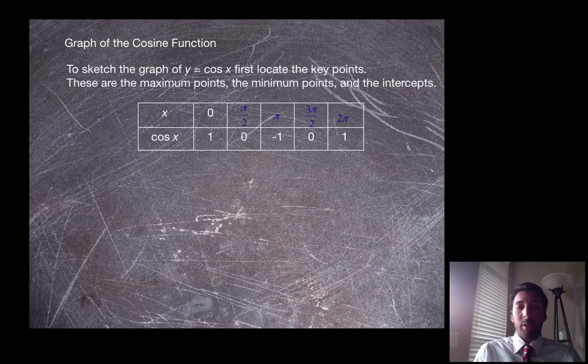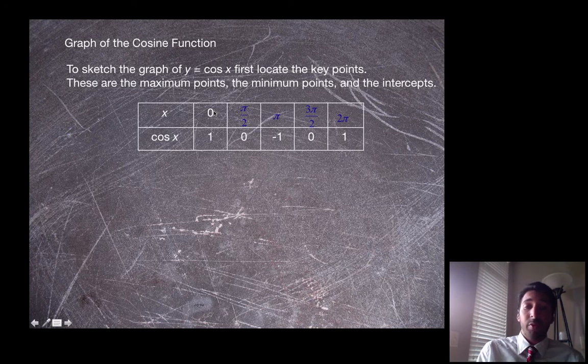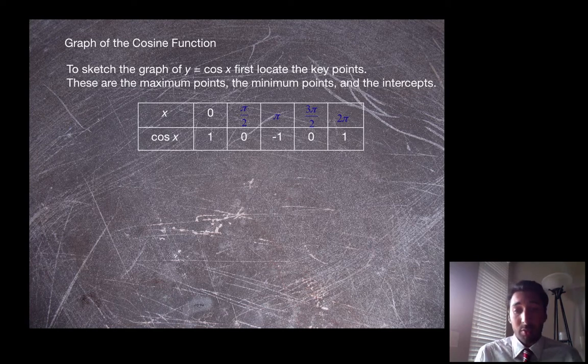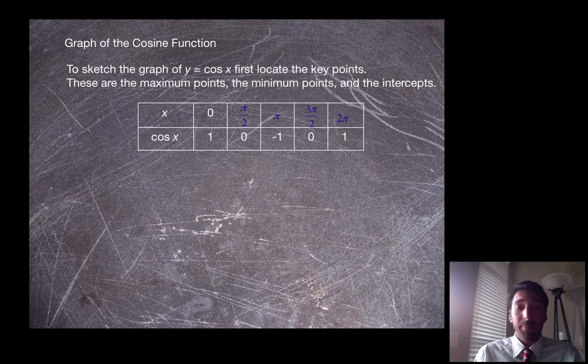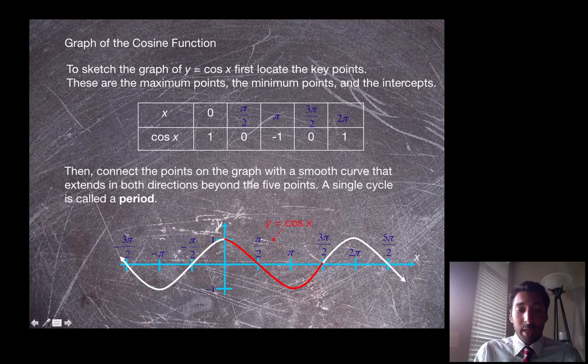All right, so again, looking at some key points, these are the points you should have gotten for cosine. Notice that when we plugged in 0 for sine, we got sine of 0 was 0. The cosine of 0 is 1 for cosine, so it's going to look a bit different. Right off the bat we know those points are going to be different.